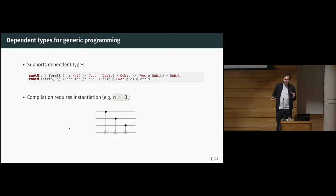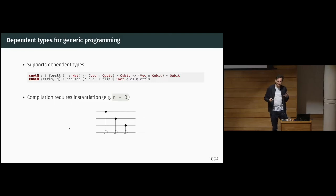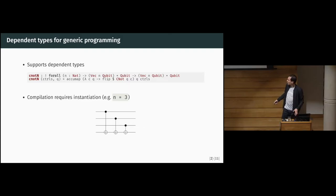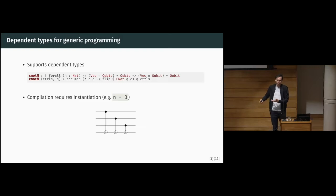What we do here is apply a controlled CNOT using each one of the controls over the target. But when we want to generate a circuit from that, in the quantum circuit formalization we have no way to express this generality over N. So we have to choose a specific number, like N equals 3, and we are able to generate a circuit where we have three CNOTs using a list of three qubits on the target. The idea of this work is to think of some intermediate representation between the full-fledged programming language and the quantum circuit representation needed to execute the program.